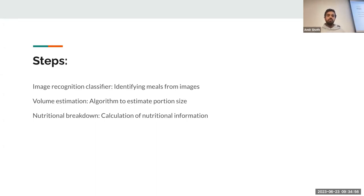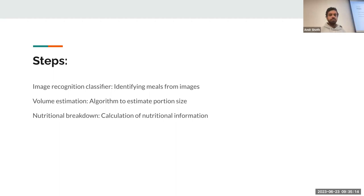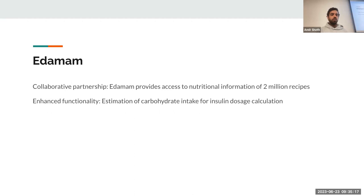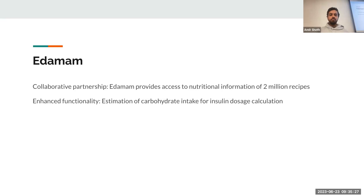Image recognition is needed for this — identifying meals from images — and we need an algorithm to estimate portion size and nutritional breakdown of each food item present on the plate, including calculation of nutritional information. Our partner is EDAMAM, which provides access to nutritional information for more than 2 million recipes, and estimation of carbohydrate intake for insulin dosage calculation can be based on that.